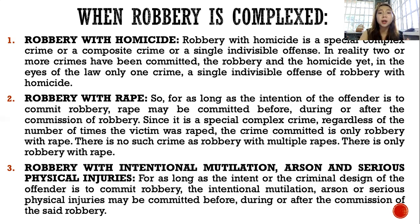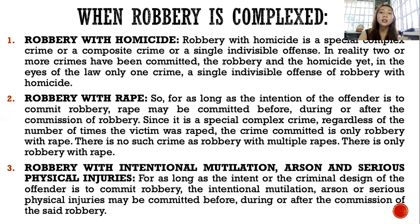Even if the killing is unintentional or accidental, it is still the single indivisible offense of robbery with homicide. Even if the victim of the robbery is different from the victim of the killing — for example, even if it is the offender who dies — as long as it is incidental to the robbery, it is still robbery with homicide.